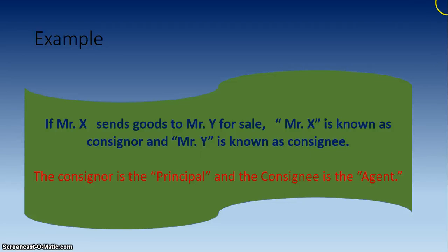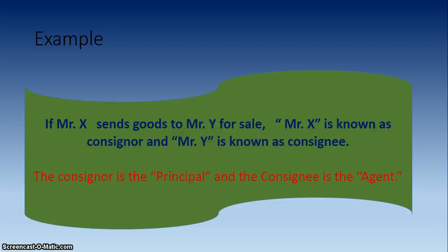For example, if Mr. X sends goods to Mr. Y for sale, then Mr. X is the Consignor and Mr. Y is the Consignee. The Consignor is the principal and the Consignee is the agent. The relation between Consignor and Consignee is that of principal and agent — Consignor is the principal and Consignee is the agent.